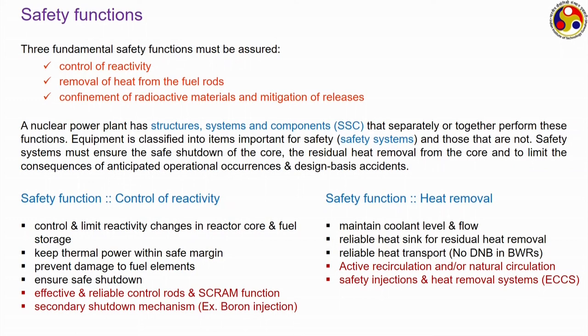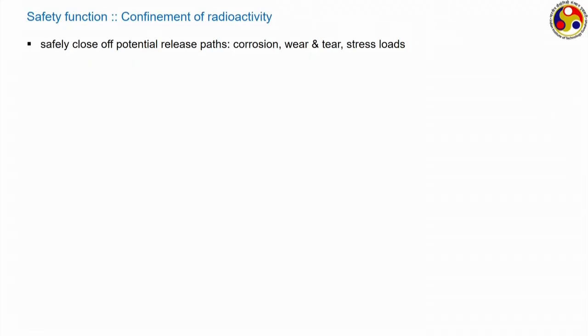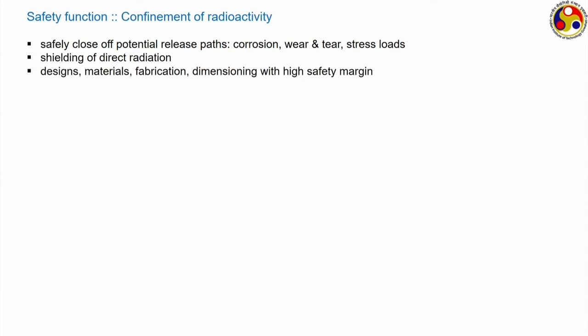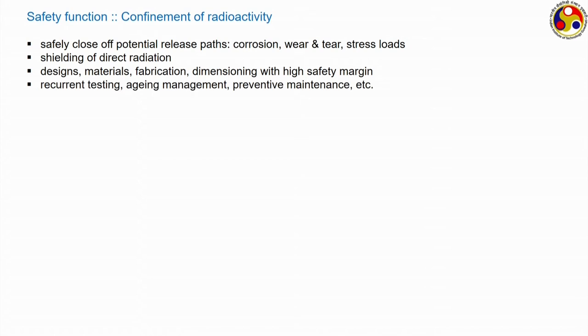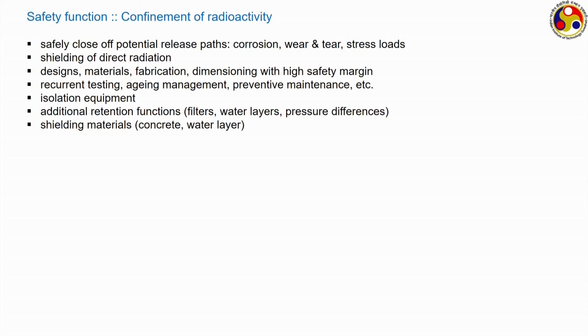Confinement of radioactivity involves closing all potential release paths against corrosion, wear and tear, and stress loads. Shields must be provided against direct radiation, with high safety margin in design, material, fabrication, and dimensioning, along with recurrent testing, aging management, and preventive maintenance. Additional retention functions like filters, water layers, and isolation equipment also contribute to confining radioactivity. Shielding materials include several levels of concrete and water layers — water has a reasonably high neutron absorption cross-section, helping reduce reactivity inside the core.